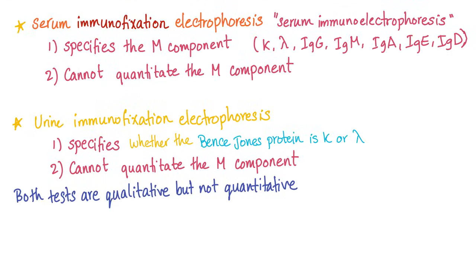The third test is serum immunofixation electrophoresis, also known as serum immunoelectrophoresis. It can specify the M component — whether it's IgG, IgM, IgA, IgE, or IgD — and identify the light chain as kappa or lambda. However, it cannot quantitate the M component. Similarly, urine immunofixation electrophoresis works the same way. Both of these immunofixation tests are qualitative but not quantitative — the opposite of serum and urine protein electrophoresis.